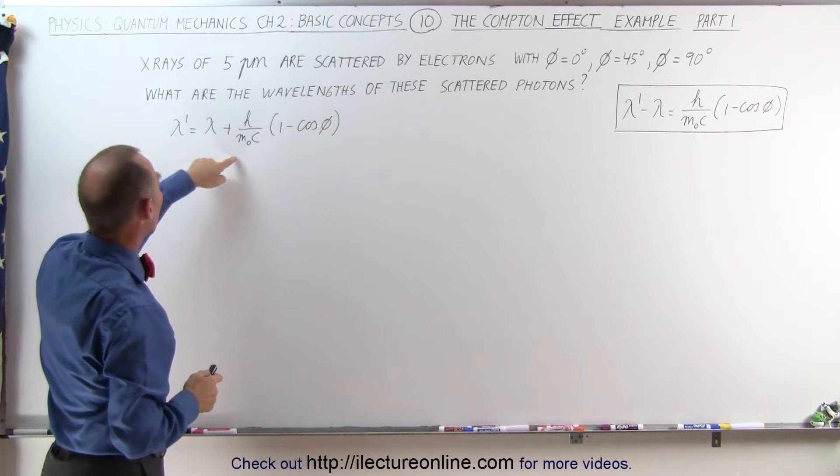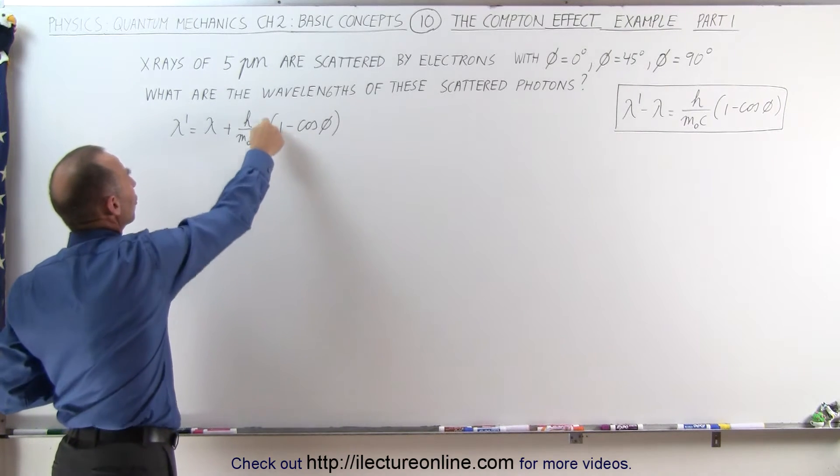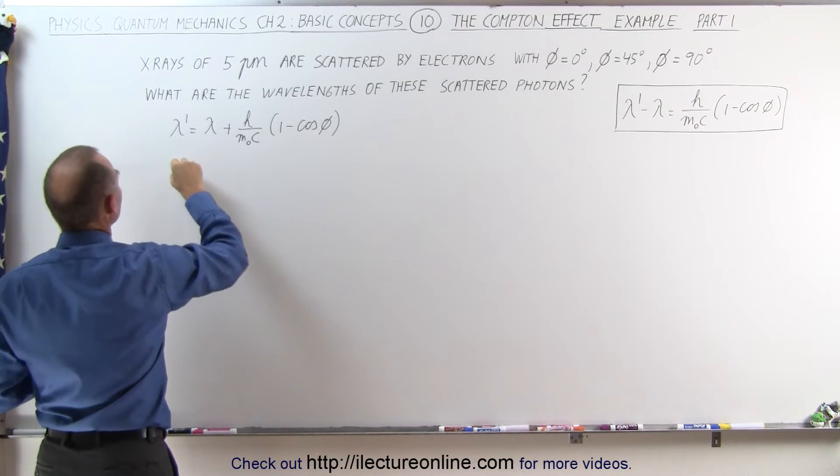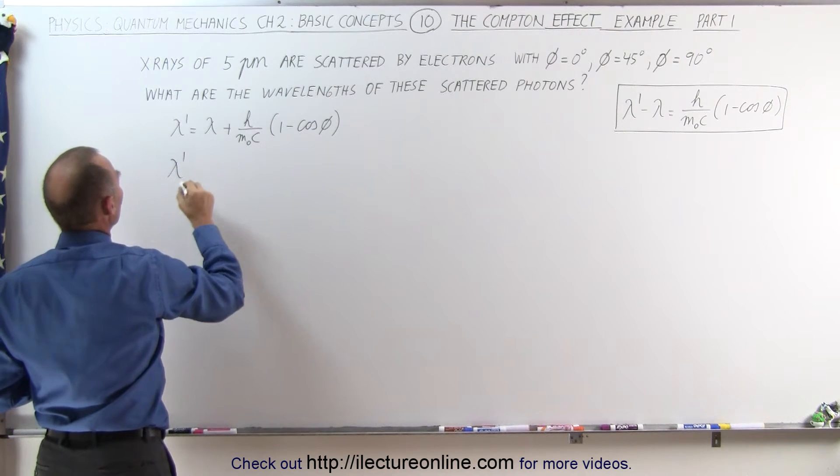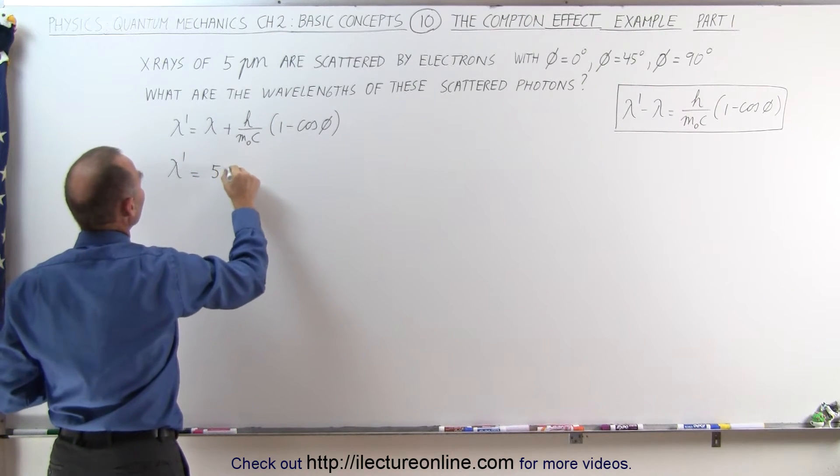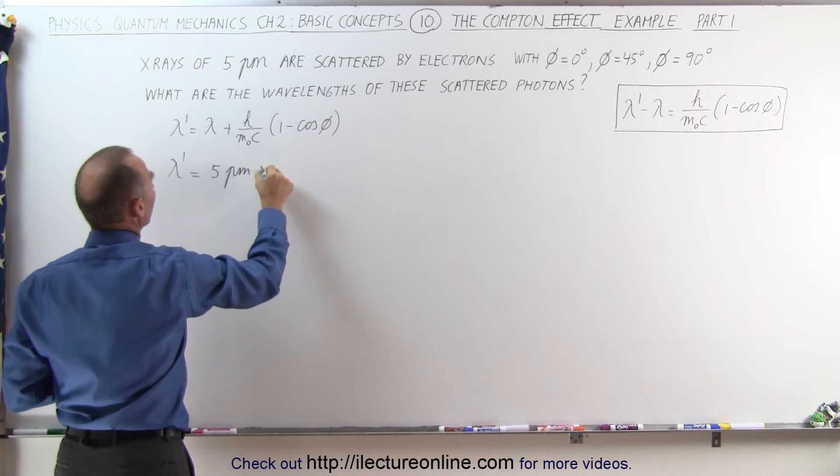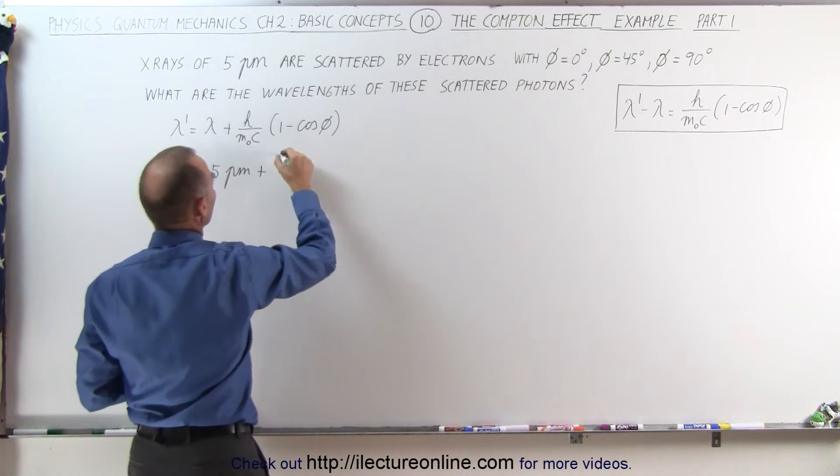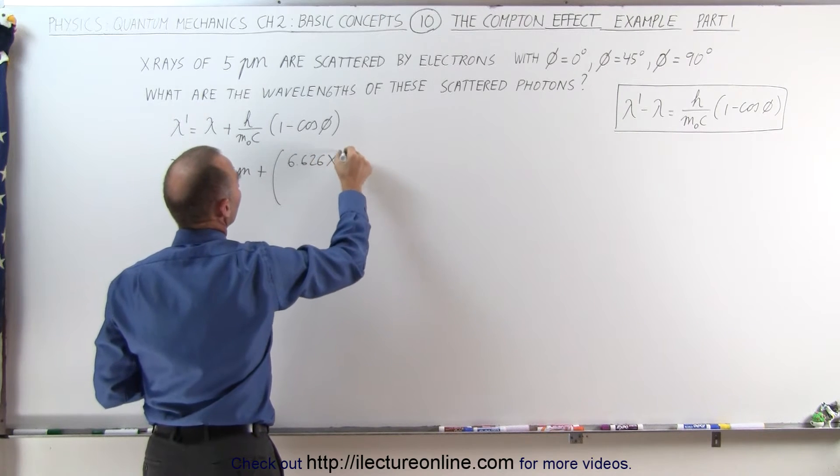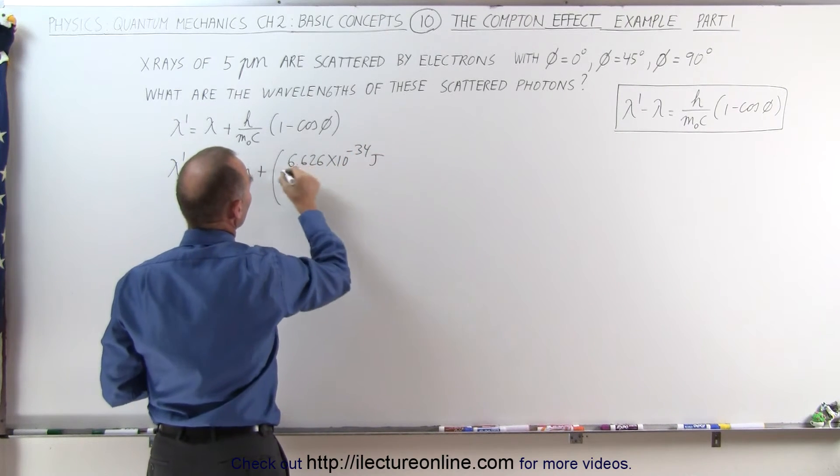Let's go ahead and calculate this quantity right here because in this particular example the wavelength of the scattered photons, the scattered x-ray photons, is going to be the wavelength of the incoming photons, 5 picometers, plus this quantity right here which is equal to 6.626 times 10 to the minus 34 joules, that's Planck's constant,